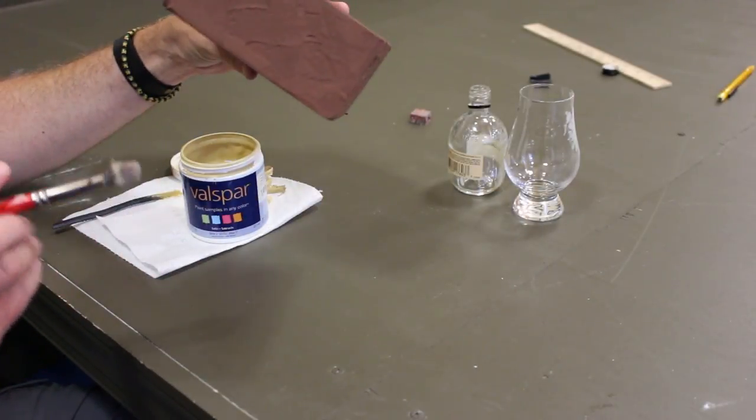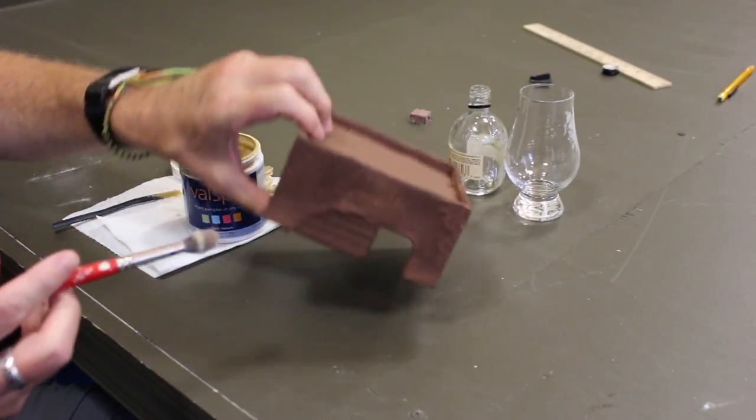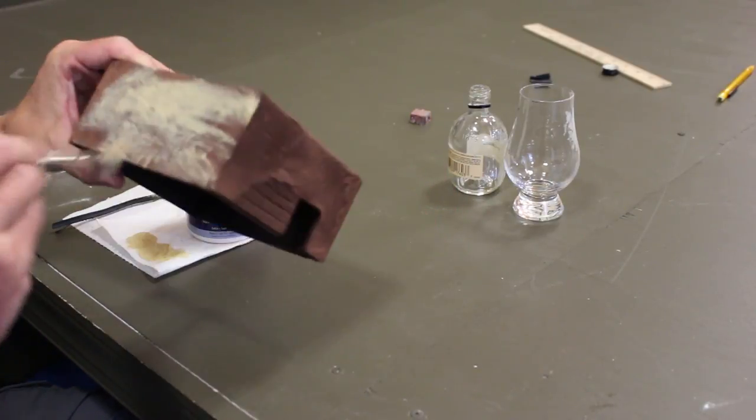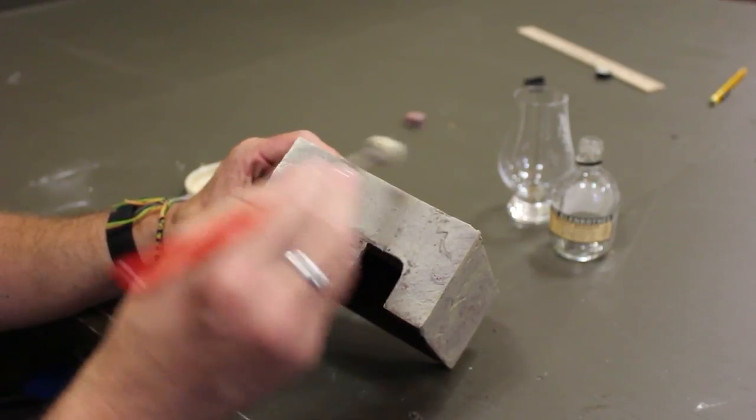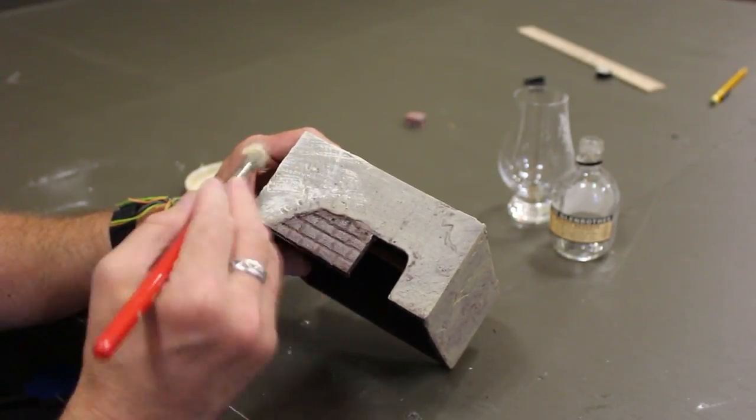After an undercoat of some primer, it is ready for a heavy dry brush of sand-colored paint. The first dry brush is done. Now we're going to go with a lighter shade of tan.